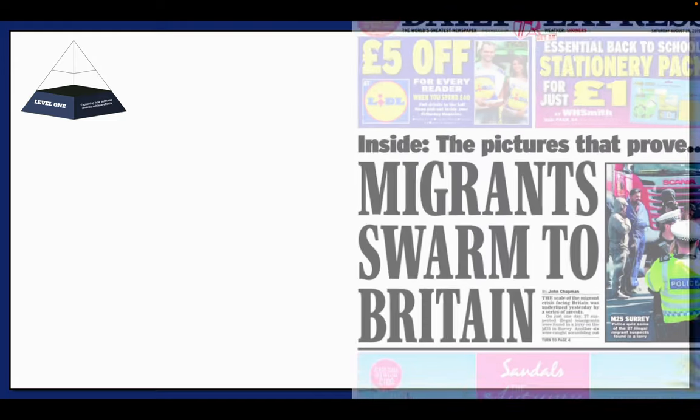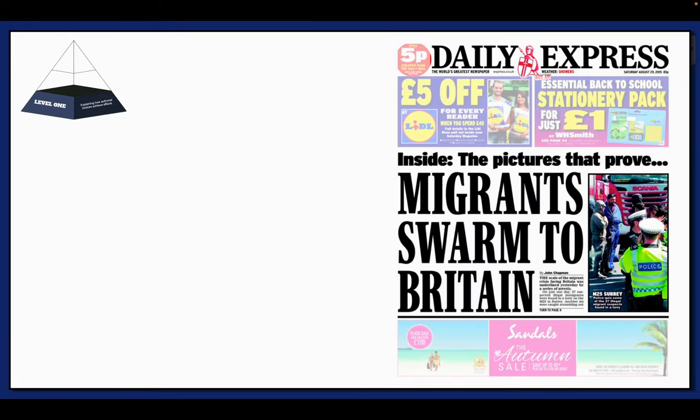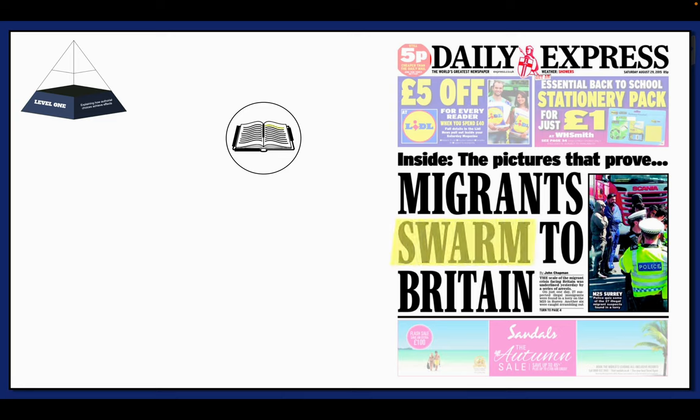Over here, we have the front page of the Daily Express, a British tabloid newspaper. On it, there is the main headline, Migrants Swarm to Britain. The editor of the newspaper and the journalists who wrote the article have made particular choices, which have certain effects and create meaning. So we have our text, the front page of the article at the Daily Express, and now we need to identify specific choices. Well, I think the diction of Swarm is an important choice here.